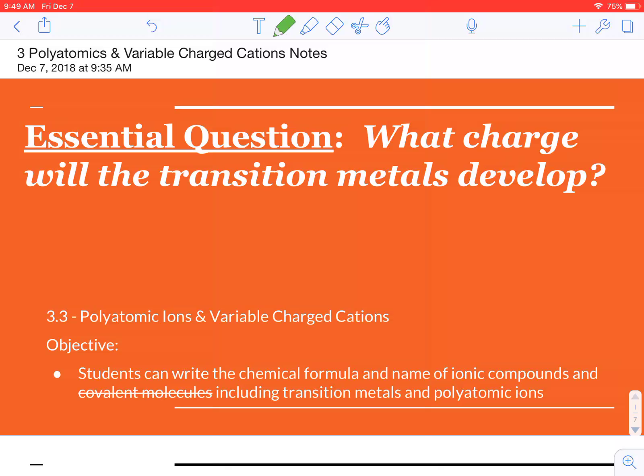All right, so your central question today is what charge will the transition metals develop? So we've learned about our S and P block elements, and we know that their charge corresponds directly with their valence electrons, which we can tell just by looking at their group number.